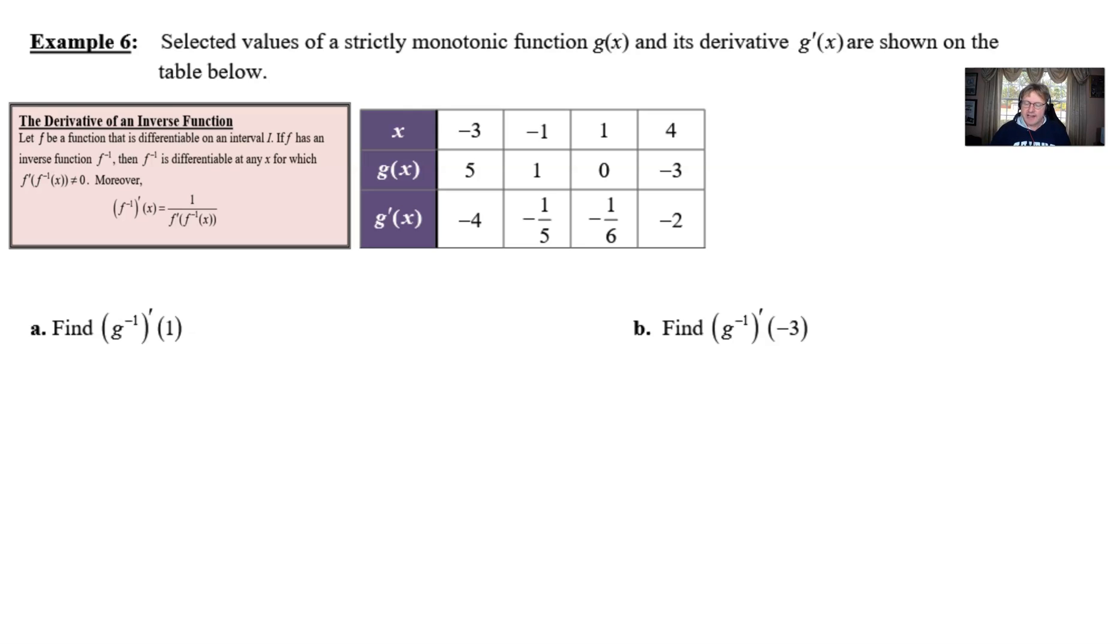What I've gone ahead and done is I've recopied and pasted in the actual derivative formula over here to the left in that sort of salmon colored box. And the question reads, selected values of a strictly monotonic function g(x) and its derivative g'(x) are shown in the table.